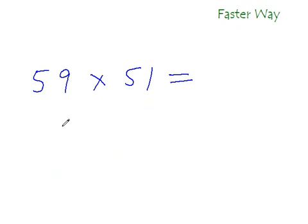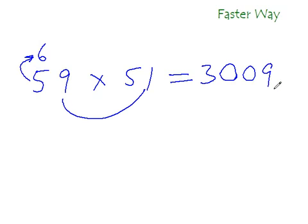Let's take one last example before we move on to the next trick, and you do it this time. What is 59 times 51? The next number after 5 is 6, so 6 times 5 is 30, and 9 times 1 is 9, so put 09. That's your answer, 3009.